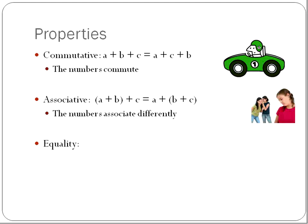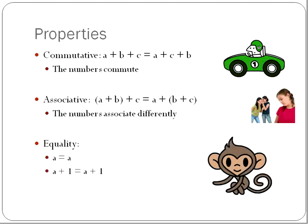The third one is the property of equality. For our major purposes, the property of equality looks like this: if there's something on one side of the equal sign, it's the same on the other side — A plus one equals A plus one. So if you add one to one side of the equation, you add one to the other side. Whatever you do on one side, you have to do on the other side. Kind of like monkey see, monkey do — hence the monkey.